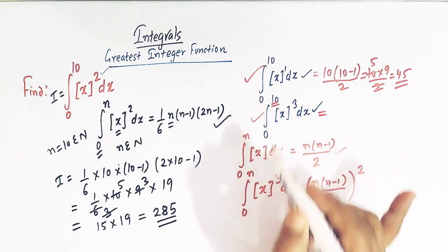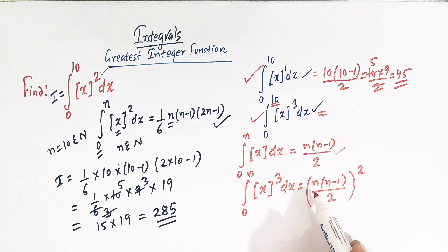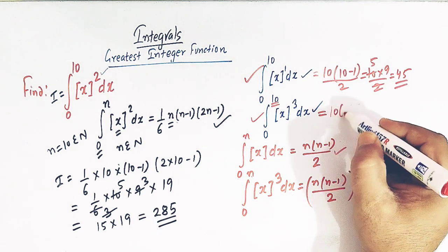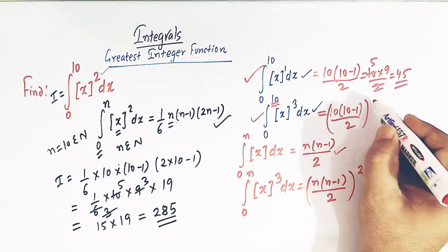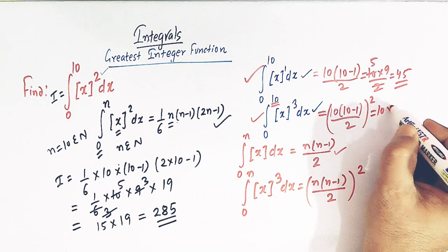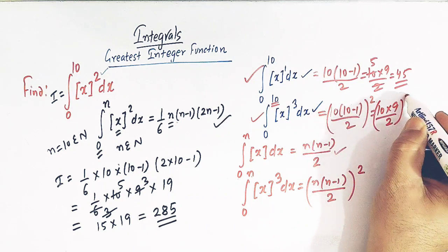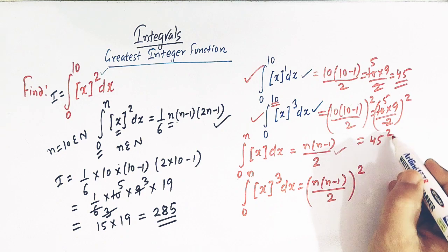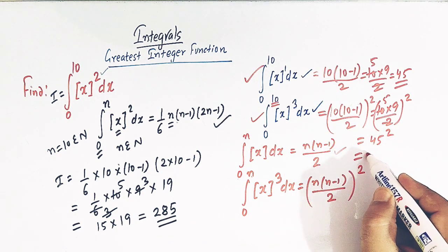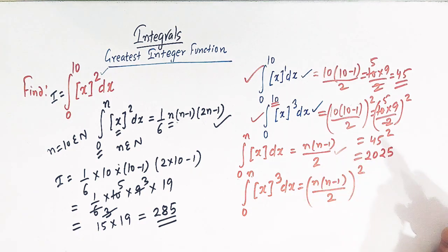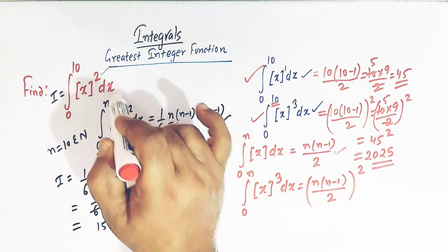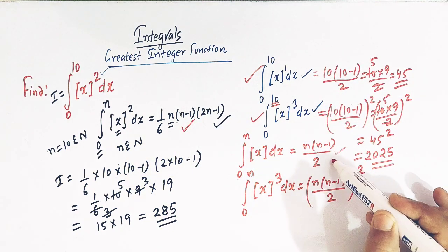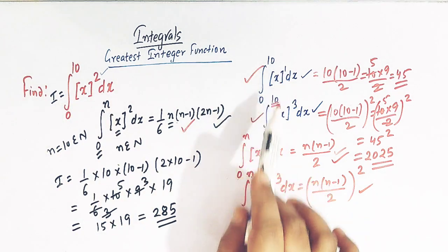Similarly, if we have the integral from 0 to n of the cube of greatest integer of x, the direct result is the square of n(n minus 1) over 2. For n equal to 10, this gives the square of (10 times 9 over 2), which is 45 squared, equal to 2025. This is how by making use of these direct results we can evaluate integrals of these types.